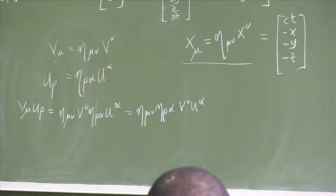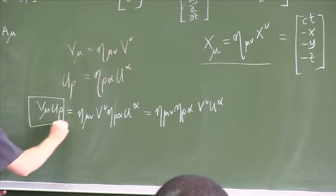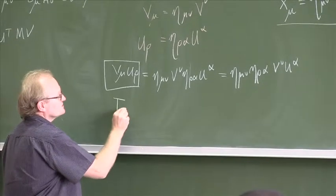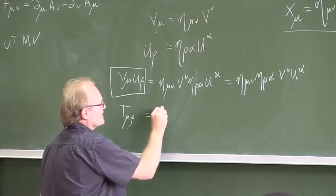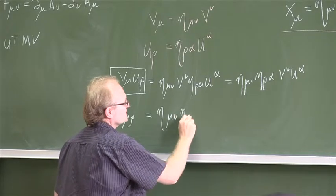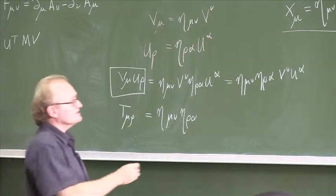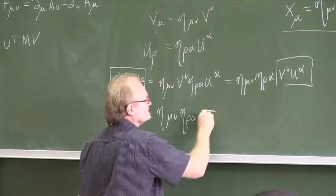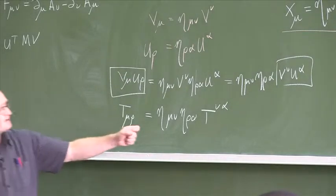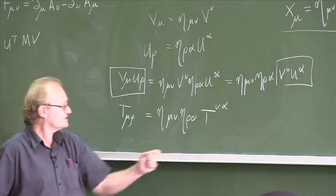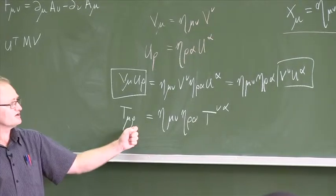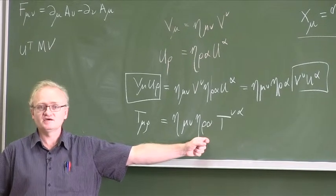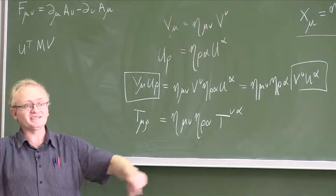So I can rewrite this as eta mu nu eta rho alpha times T nu alpha, where T mu rho is a quantity with two indices. Every time you want to bring an index down — say, bring mu down to make it mu — you multiply by eta mu nu. The rule you learn for one index works for a tensor with any number of indices.